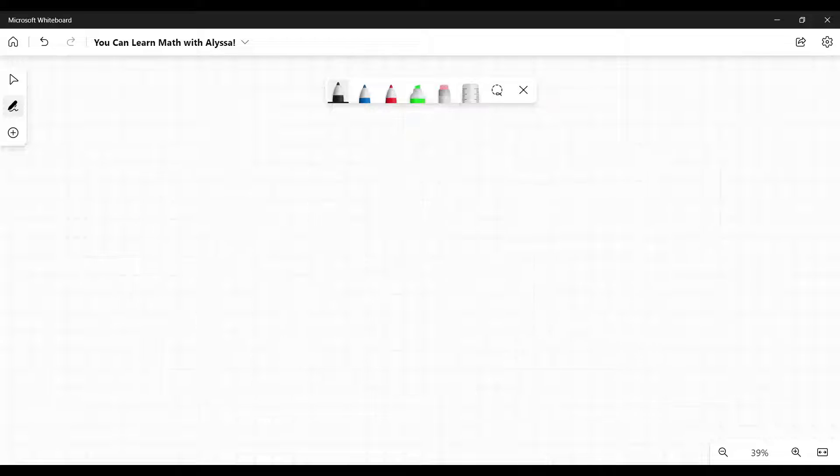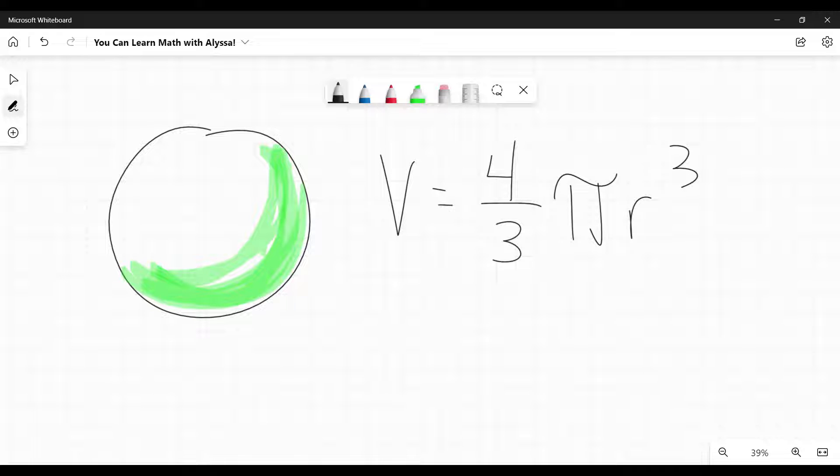First up are spheres. Spheres are the ones, there's no real shortcut to try to memorize what the volume of a sphere is. You just have to memorize it. And the formula is this. It is 4 thirds pi r cubed. The one thing that I do, that does help me remember this when I see the r cubed, I know that's volume.